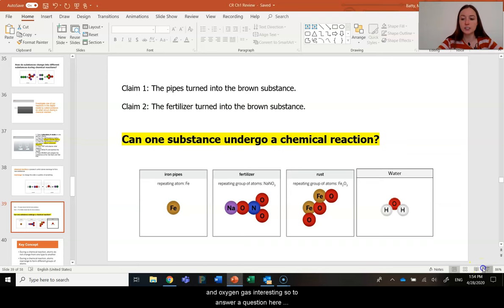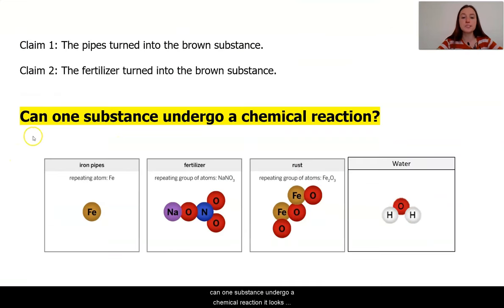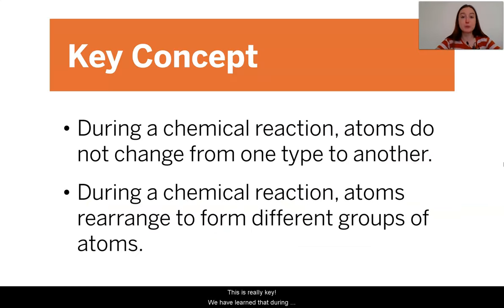Interesting. So to answer our question here, can one substance undergo a chemical reaction? It looks like the answer is yes. A chemical reaction just requires one or more substances to rearrange into something new, right? So we get our reactants and our products.